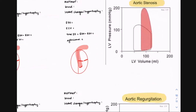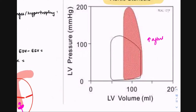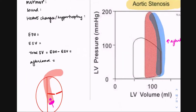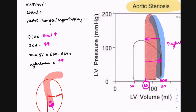In aortic stenosis your aortic valve is stenosed, so it's harder for the left ventricle to push out blood. Less blood goes through the aorta and the left ventricle has to work harder, so the afterload significantly increases. The left ventricle is pushing out less blood — instead of an ESV of 50 ml, we're left with about 80 ml. So end systolic volume increases, end diastolic volume is the same to slightly increased, and stroke volume decreases.